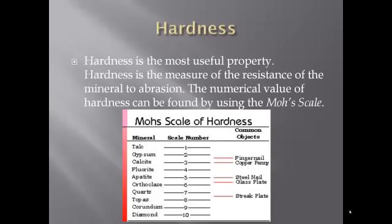Probably the property we're going to use the most, and you should become most familiar with, is hardness. Hardness is resistance to scratching. You're probably familiar with the Mohs scale of hardness, where talc is the softest mineral and diamond is the hardest. The scale goes from 1 to 10, with talc at 1 and diamond at 10. There are common objects you can use to determine hardness: your fingernail is about 2.5, copper pennies about 3, steel nails about 5, and a glass plate about 5.5. You can relatively tell the hardness of minerals by what can scratch what.